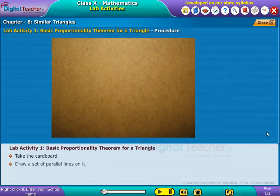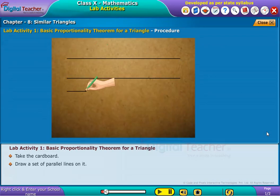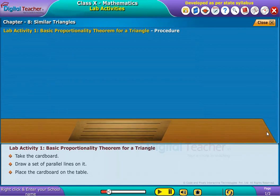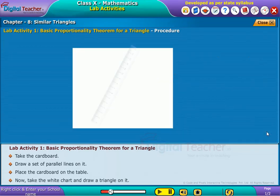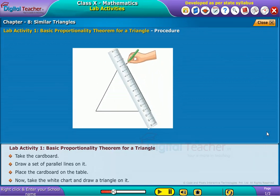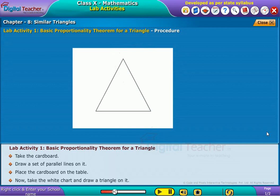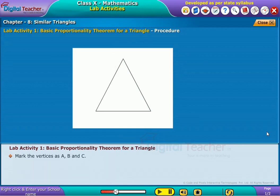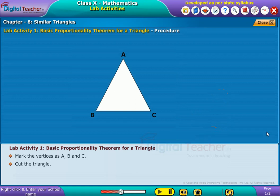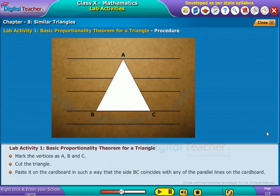Take the cardboard and draw a set of parallel lines on it. Place the cardboard on the table. Now take the white chart and draw a triangle on it. Mark the vertices as A, B, and C. Cut the triangle. Paste it on the cardboard in such a way that the side BC coincides with any of the parallel lines on the cardboard.